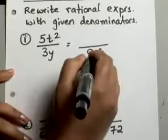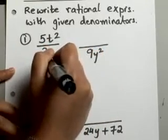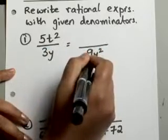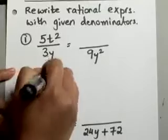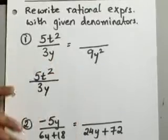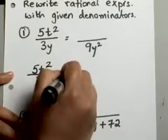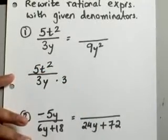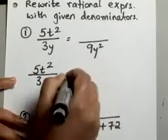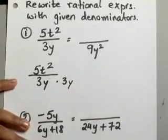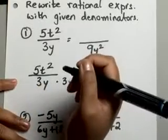The idea is, what do we need to multiply 3y into so that it will be 9y squared? Now think about it, if I take this rational expression here, I know if I multiply 3 into 3, I get 9. And to get the y squared, I need to multiply the y with another y. So if I multiply 3y by 3y, I will end up with 9y squared.